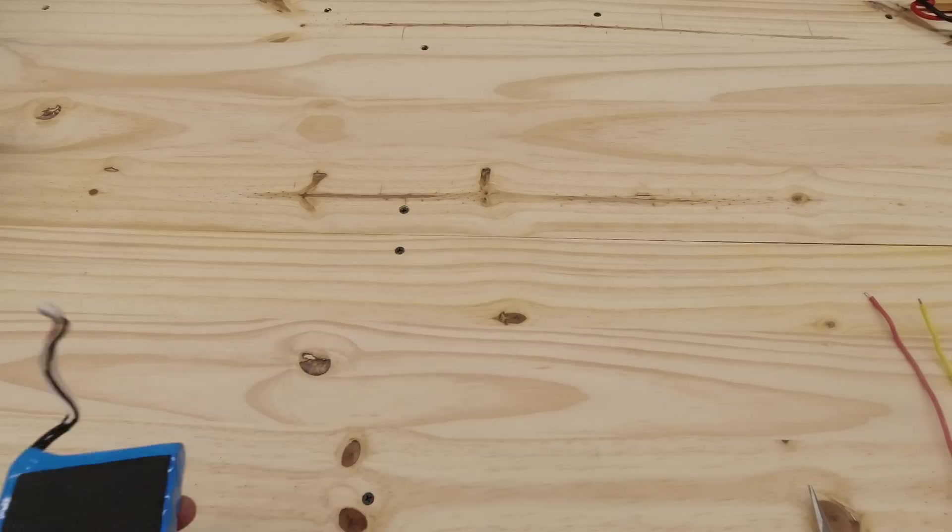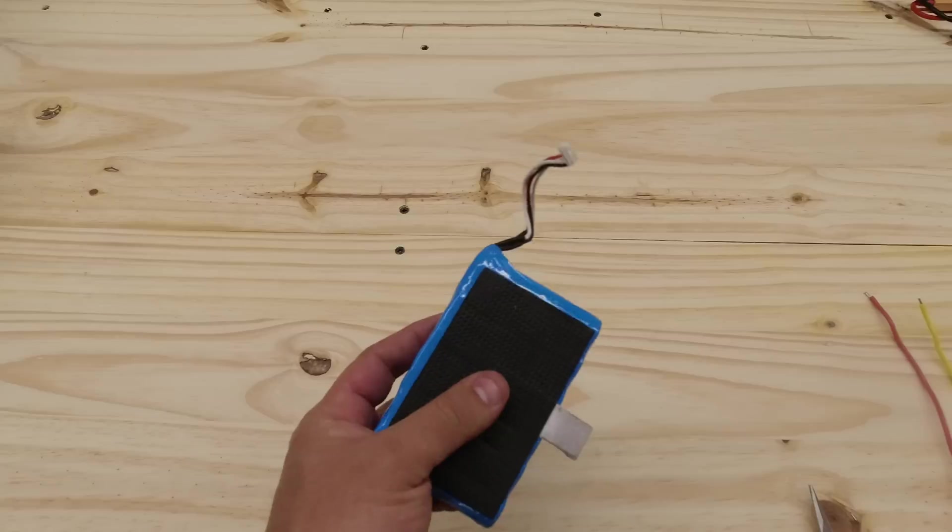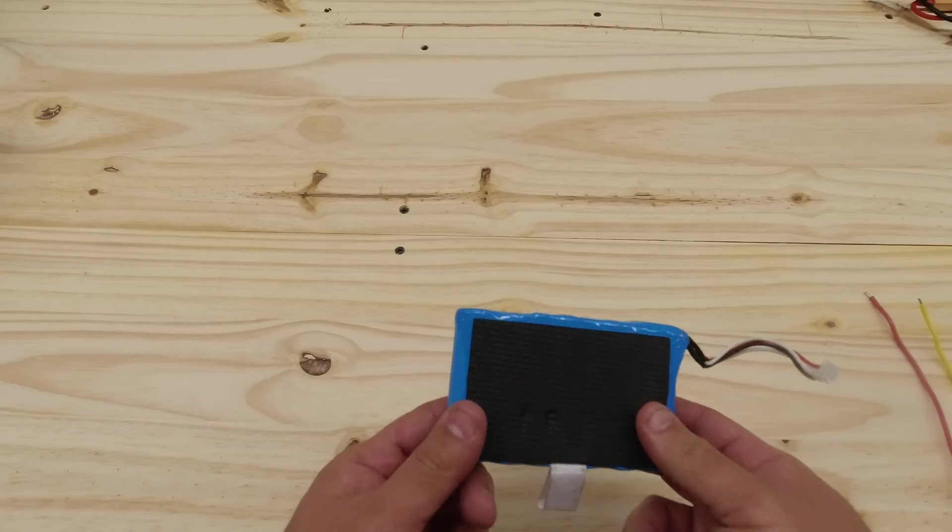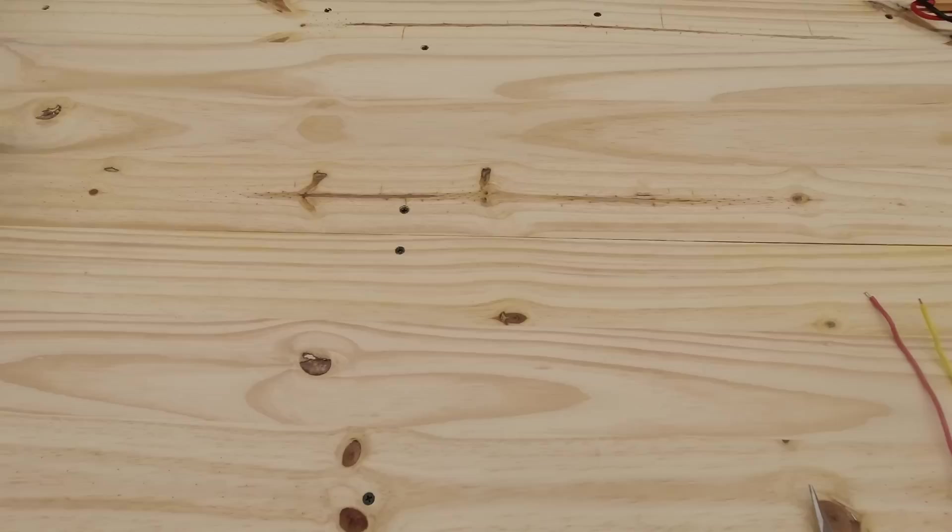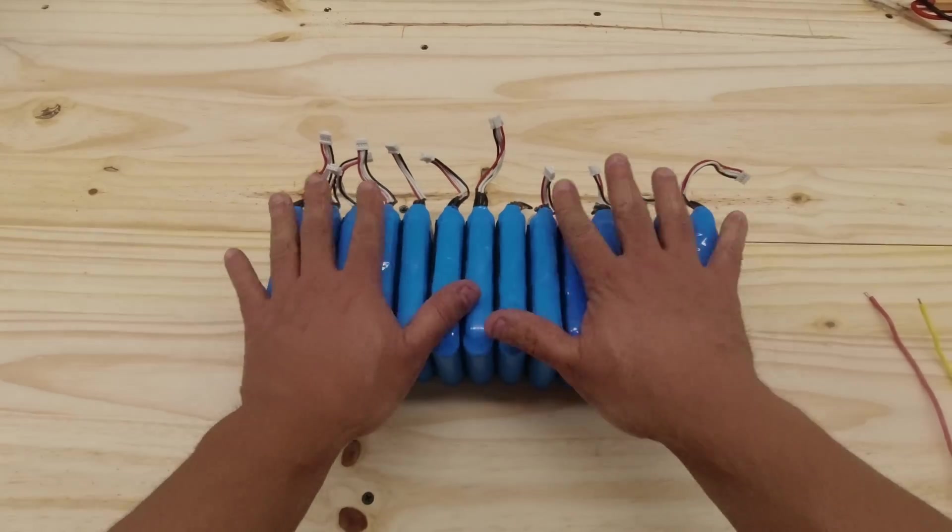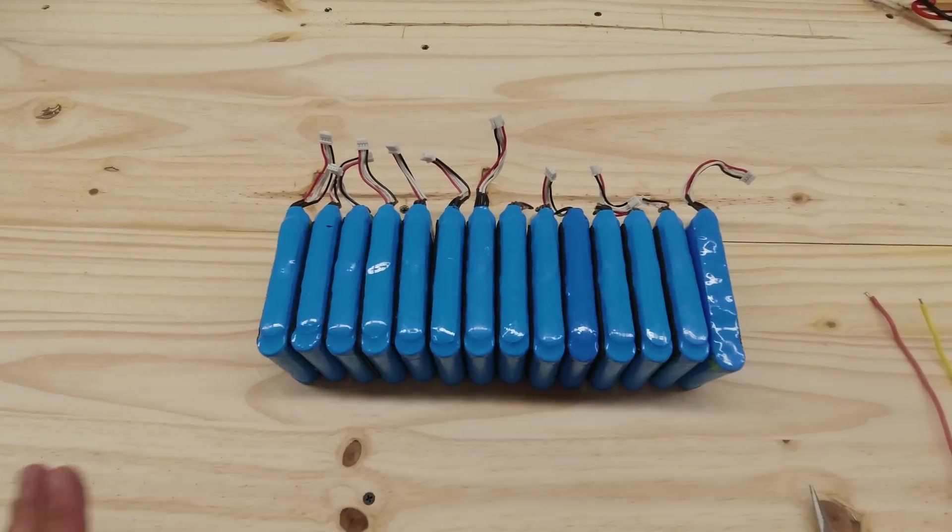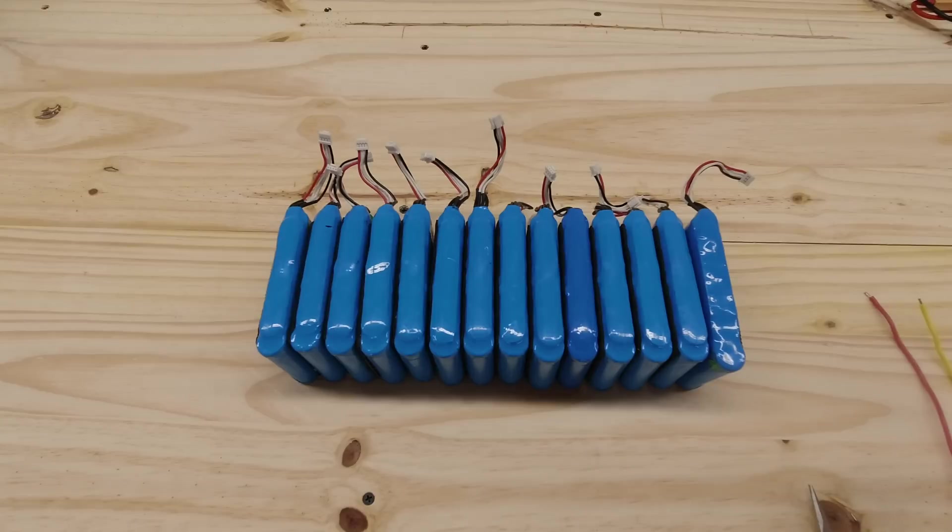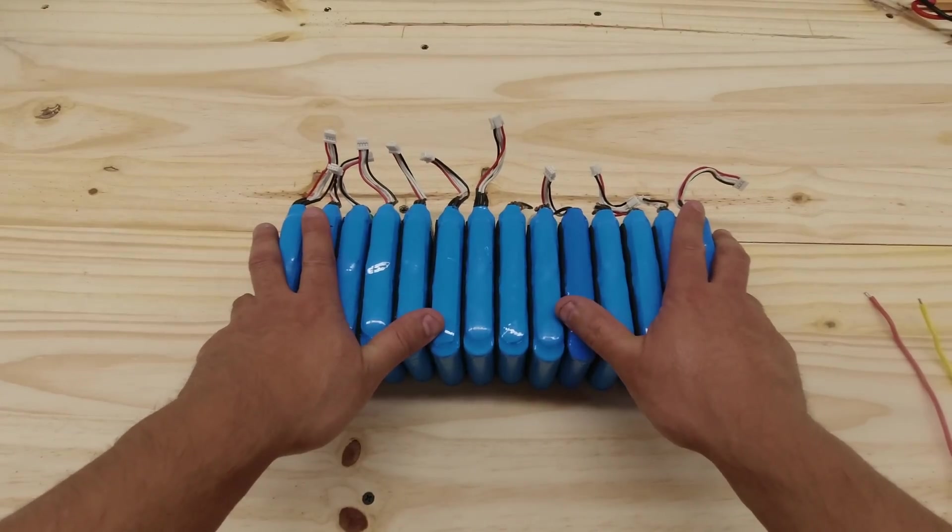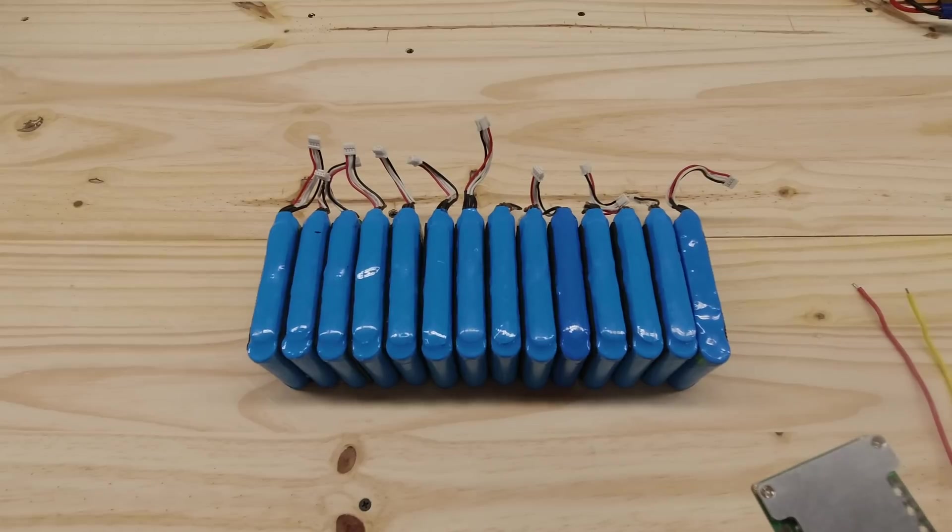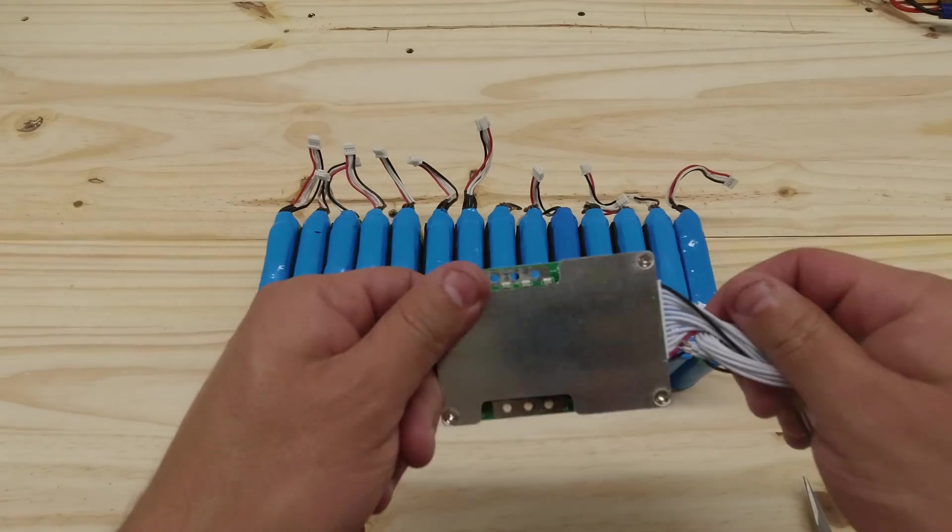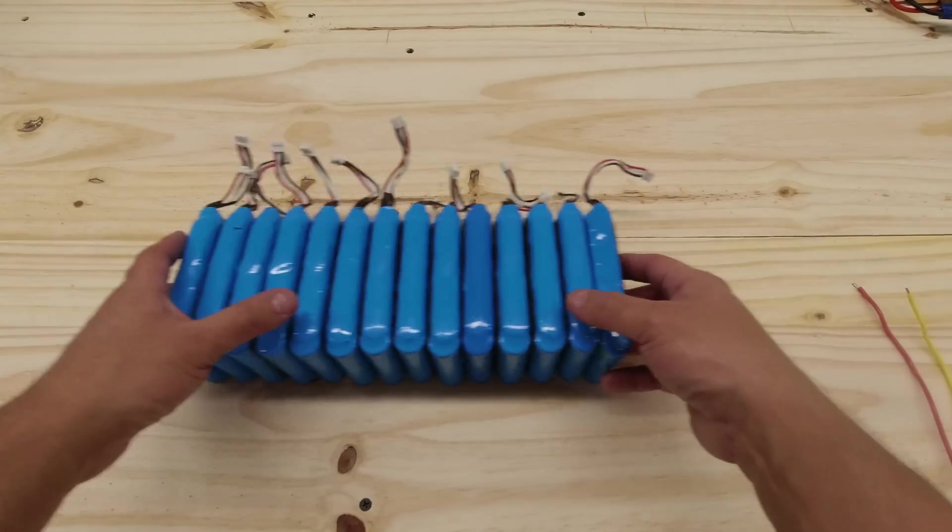All right, so step one, you gotta buy a few of these. You gotta buy at least seven if you want to make a 24 volt pack, or 13 or 14 if you want to make 48 volt packs. Depending on what you're trying to power, it's going to determine what voltage you want to do. So today we're going to make a 13S 48 volt pack because that's the BMS that I have for this. Let's build this.